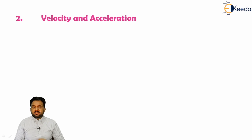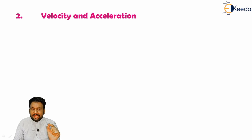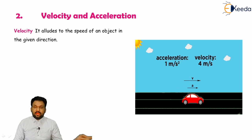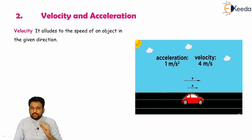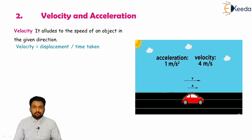The second aspect is velocity and acceleration. I will give you four aspects for the applications of differential equations, and the second one is velocity and acceleration. Velocity is related to speed, and acceleration is related to velocity. Velocity alludes to the speed of a subject in a given direction. Velocity equals displacement — for example, if you are driving a car, your speed over time gives displacement: in two minutes you cover one kilometer or half a kilometer.